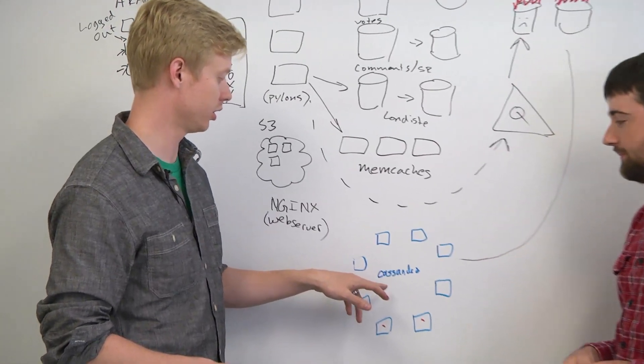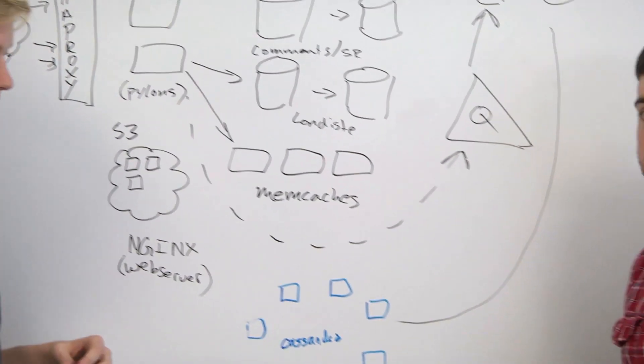So you replace memcachedb with Cassandra for the pre-compute stuff. And that solved the write contention issue.